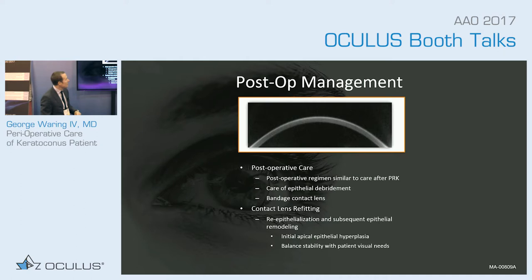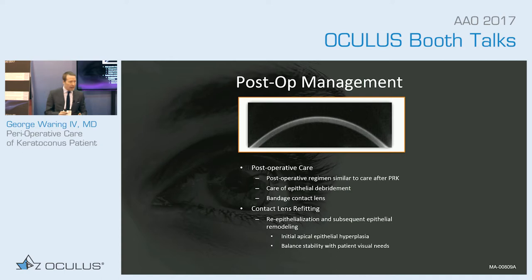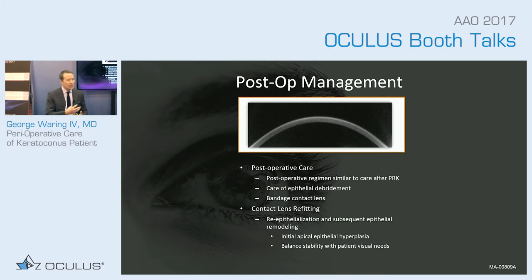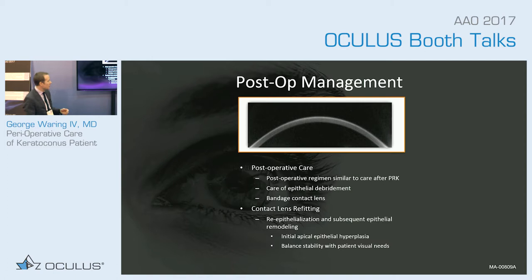Post-operative care is similar to care after PRK. We do tend to leave the bandage contact lens on our cross-linking patients a little bit longer than PRK, and we're more careful to monitor epithelial healing to avoid delayed healing. If delayed healing occurs, we will actually remove the bandage contact lens, because it's often the apposition on the cone that's holding back healing from the cross-linking — removing it allows that last millimeter epithelial defect to often heal itself.